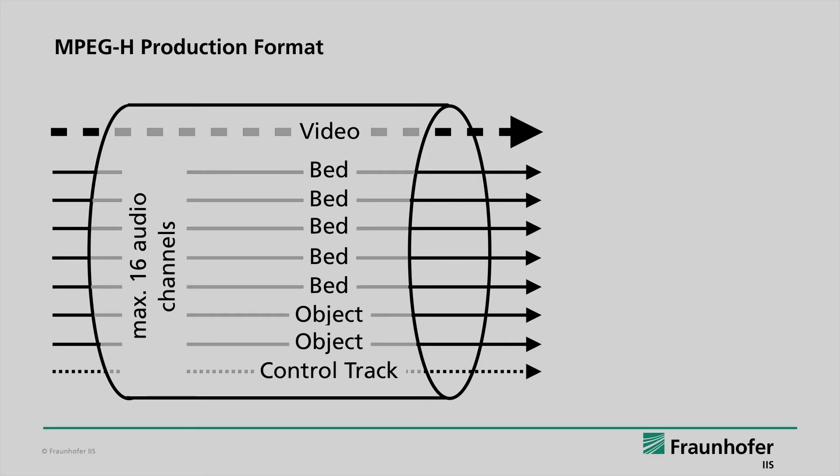So now we know more about MPEG-H metadata. But how can we transmit this? And how can we ensure that the metadata is always present, never gets lost and is always frame accurate to our audio and video signals? MPEG-H has a solution for this: the so-called MPEG-H control track. Looking at the next slide, you can see an SDI signal including video and maximum 16 audio channels, and on the 16th channel there is something called the control track.